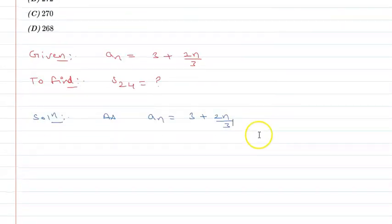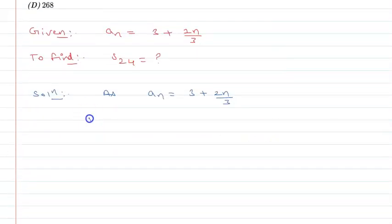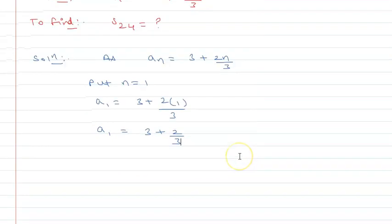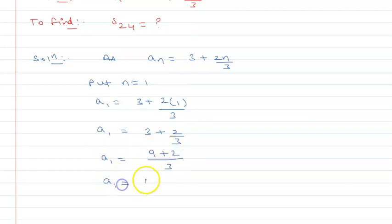If n = 1, we will get a1 = 3 + 2(1)/3, that is 3 + 2/3. Taking LCM, this will be (9 + 2)/3 = 11/3. This is the first term.